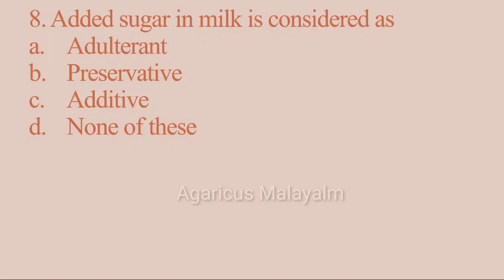Eighth question: added sugar in milk is considered as? Option A: adulterant. Option B: preservative. Option C: additive. Option D: none of these. Correct answer: Option A — adulterant. Milk adulterants include vitamins, amino acids, aluminum, boric acid, caustic soda, benzoic acid, salicylic acid, hydrogen peroxide, sugar, and melamine.